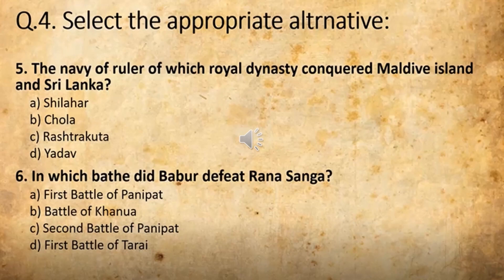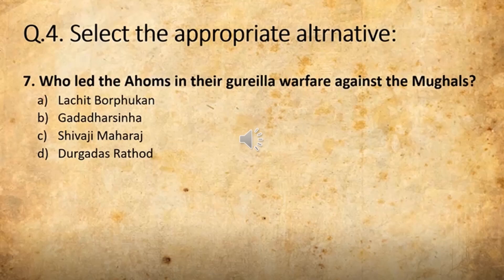Now we will move on to the last one, that is the seventh question of question number 4. Who led the Ahom in their guerrilla warfare against the Mughals? The options are: Lachit Borphukan, Kadadar Dinhah, Shivaji Maharaj, and Jugadar Rathor. The correct answer for this is Lachit Borphukan.